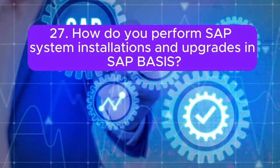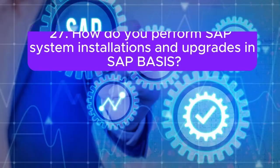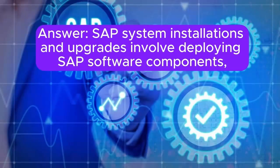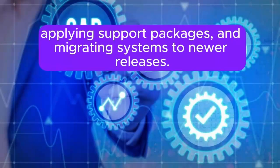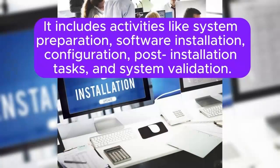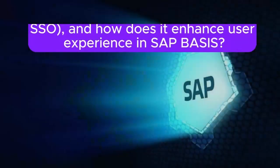Question 27: How do you perform SAP system installations and upgrades in SAP BASIS? SAP system installations and upgrades involve deploying SAP software components, applying support packages, and migrating systems to newer releases. It includes activities like system preparation, software installation, configuration, post-installation tasks, and system validation. SAP installation guides and tools like SAP Inst are used to perform system installations.